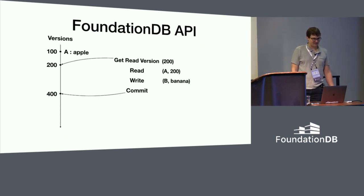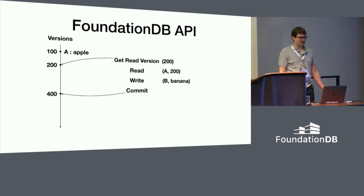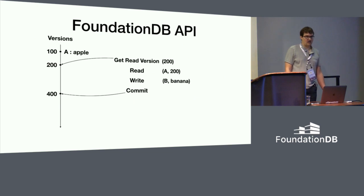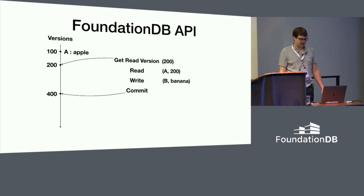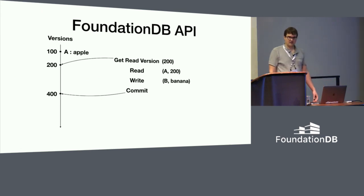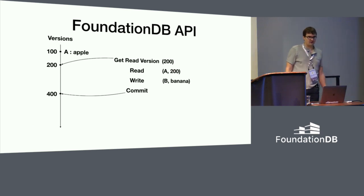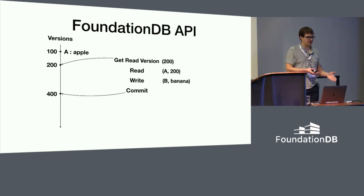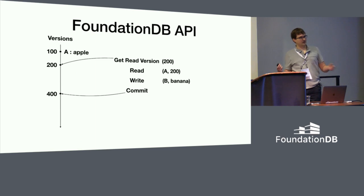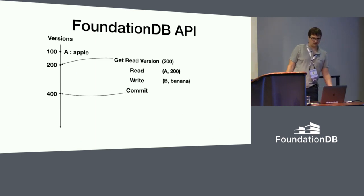Before I can add more boxes, we need to talk about how FoundationDB provides consistency. I mentioned strict serializability — to provide that, we first need serializability. In FoundationDB, serializability is explicit: every single commit is given a version number, and you can observe serializability by comparing version numbers. You know one commit happened after another if its commit version is higher.